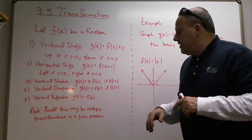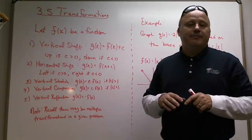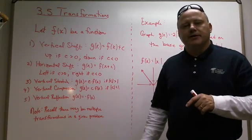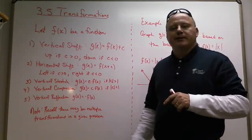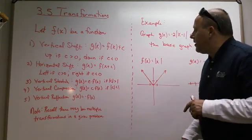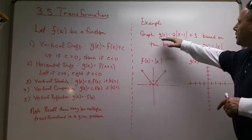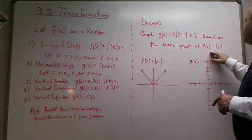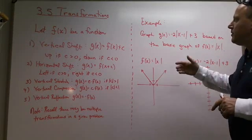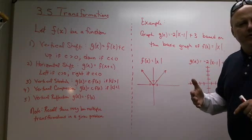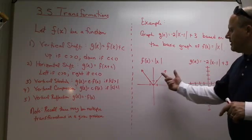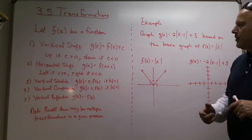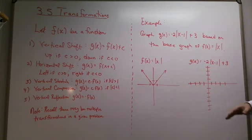I want you to recall that there may be multiple transformations in a given problem — you can have up to four or five transformations being applied. Now, I gave an example: negative two times the absolute value of x minus one, plus three, based on the basic graph of the absolute value of x. That's the V-shape — so f of x is the absolute value of x — and we're going to apply this transformation to it.